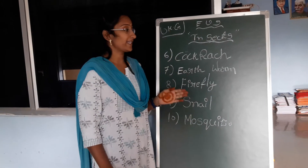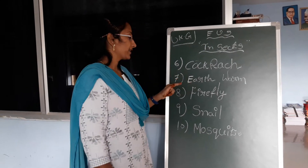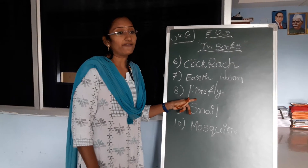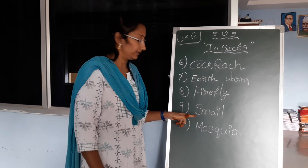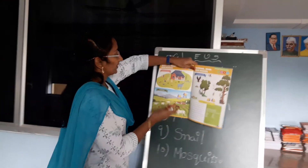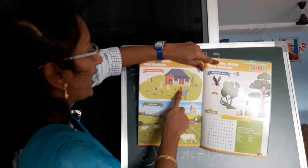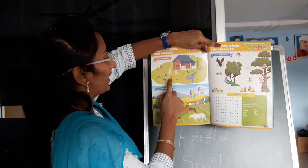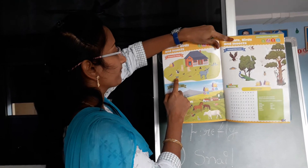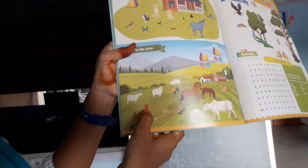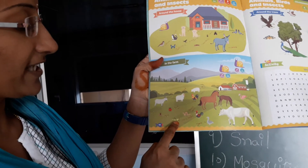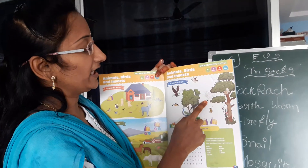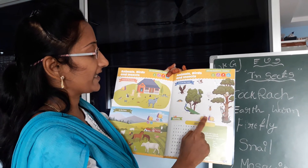Okay children, let me repeat all these insect names. Cockroach — sixth one is cockroach. Seventh one is earthworm. Eighth one is firefly. Ninth one is snail. Tenth one is mosquito. Have you seen that picture? Housefly — it is called housefly. It is called ant. It is called cockroach. It is called mosquito. It is called butterfly. Here is bug, here is bee, here is grasshopper, here is earthworm. Here is spider. Here is snails — snails are also insects.